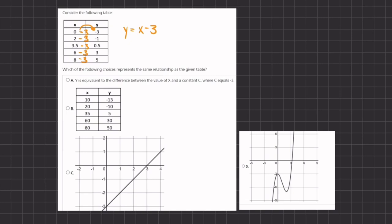Now let's write this out. We have y is equivalent to the difference between the value of x, and the difference means minus, so we are going to subtract the constant that we are given, which is negative 3. Now remember that a negative and a negative make a positive, so if we simplify this, we get y equals x plus 3, which is quite different than our function. Therefore, a is incorrect.